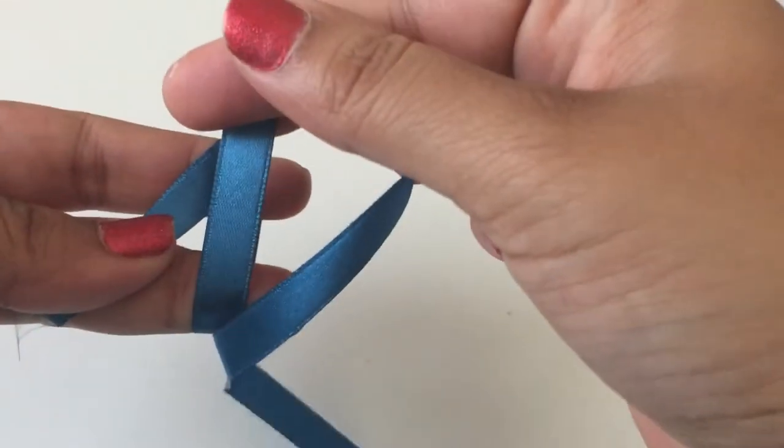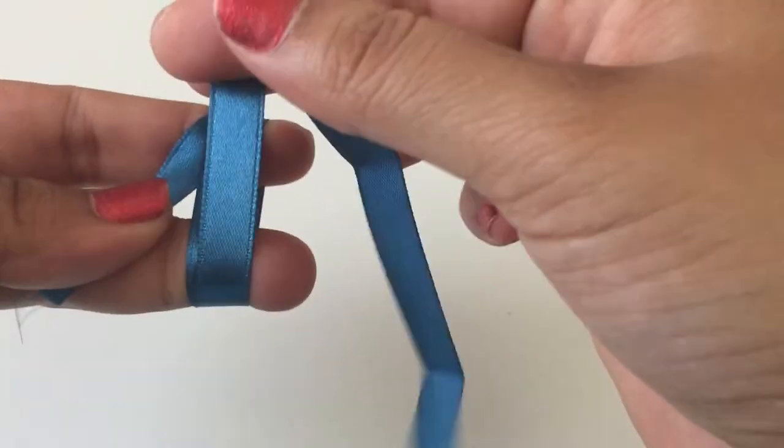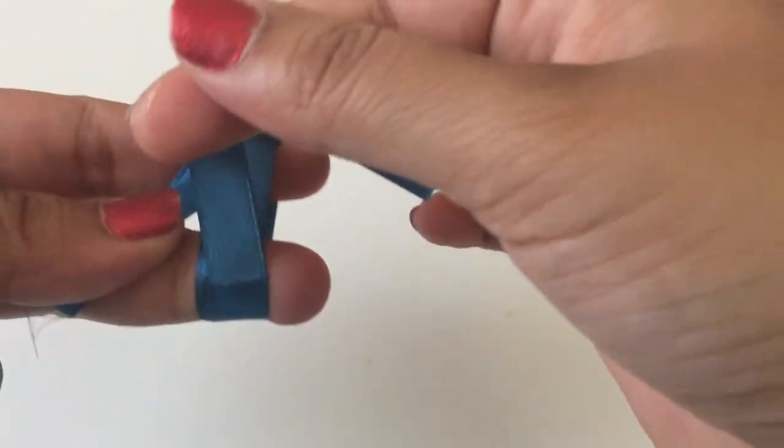Now wrap the ribbon around your index and middle fingers. Once you have three loops,